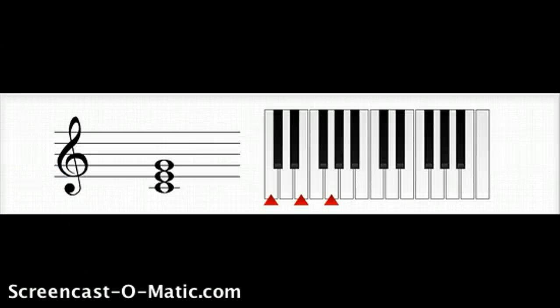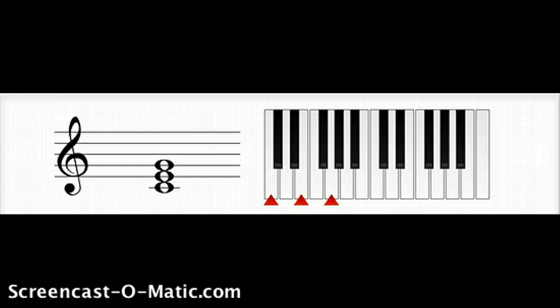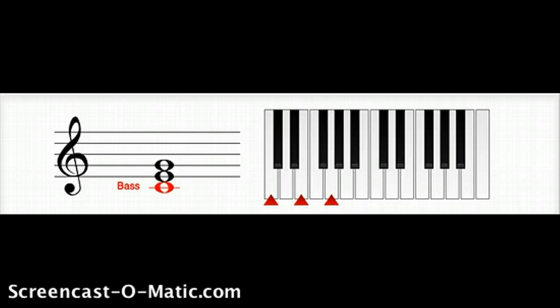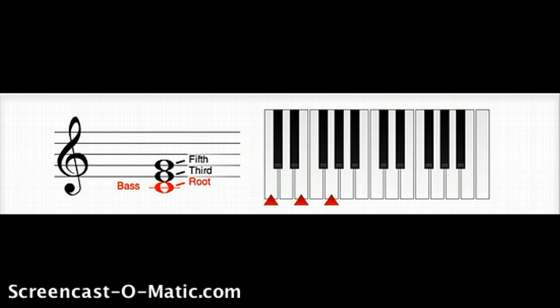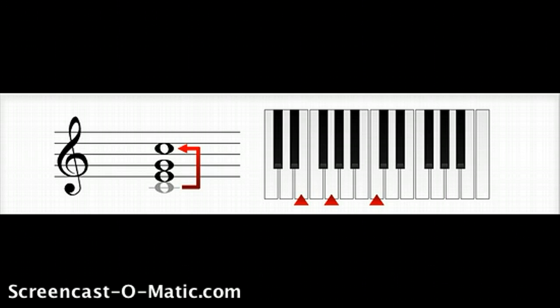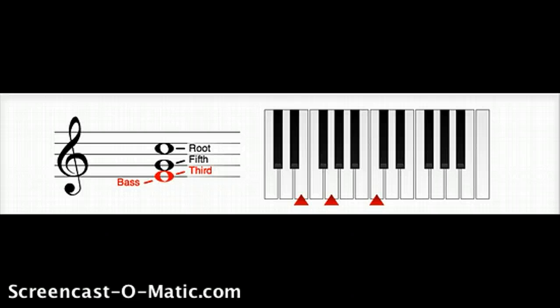Here we are in C major and that is a one chord, so Roman numeral capital one. The first thing we're going to do is the bass note is the lowest note and that sort of determines the name of the inversion. When the lowest note is the root of the chord then the triad is in root position. Next let's invert the chord. The bass note is now the third of the chord. This is called first inversion.